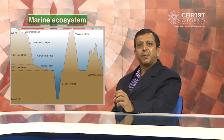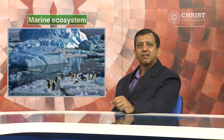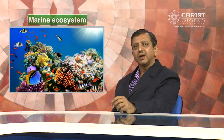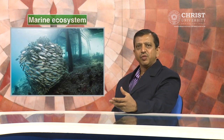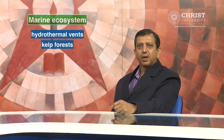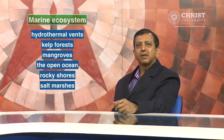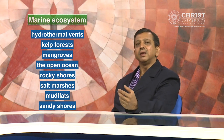Different areas of the ocean can be classified as different types of marine ecosystems. Marine ecosystems include the abyssal plain, which includes areas like deep sea coral, whale falls and brine pools. These also include polar regions such as the Arctic and the Antarctic. Coral reefs is another kind of marine ecosystem. The deep sea, hydrothermal vents, kelp forests, mangroves, the open ocean, rocky shores, salt marshes and mud flats as well as sandy shores are also considered marine ecosystems.